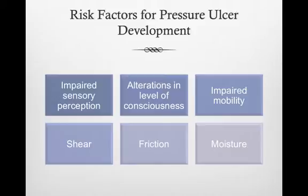Any patient who has experienced decreased mobility, decreased sensation, fecal or urinary incontinence, or poor nutrition is at risk for pressure ulcer development. Patients with altered sensory perception for pain or pressure are at risk because they cannot feel their body sensations. Patients who are unable to independently change positions are also at risk because they cannot shift pressure off of their bony prominence.